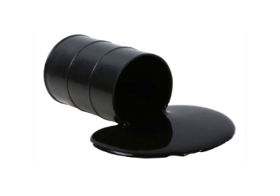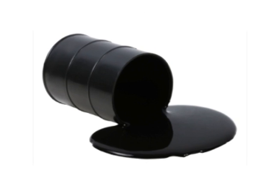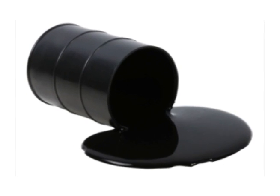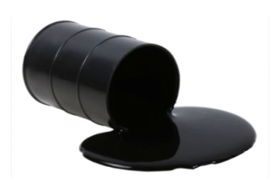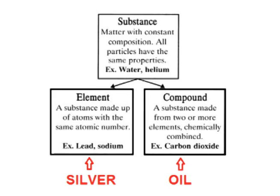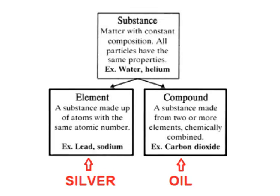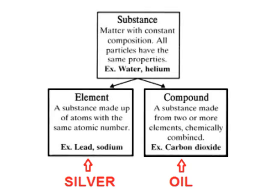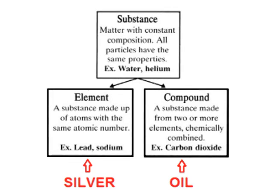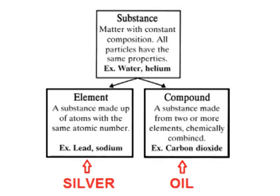Often silver is compared to oil to mislead people into thinking silver is running out. However, oil is several compounds, while silver is an element. When oil is used, the compounds break down and become new substances — what remains is no longer oil, and each time oil is used, the amount of oil on the Earth decreases. When silver is used, the amount of silver does not decrease.